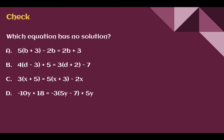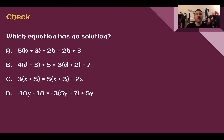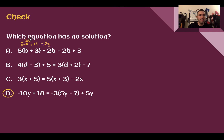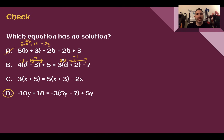Check your understanding: Which equation has no solution? Pause the video and complete the check. You should find that D is the one with no solution. For no solution, we're looking for the variables to cancel from both sides and leave a false statement. For A: 5B plus 15 minus 2B gives 3B plus 15 equals 2B plus 3. Subtracting 2B still leaves a B — that gives one solution. For B: 4D minus 12 plus 5 is minus 7; combining with the right side gives one solution as well.